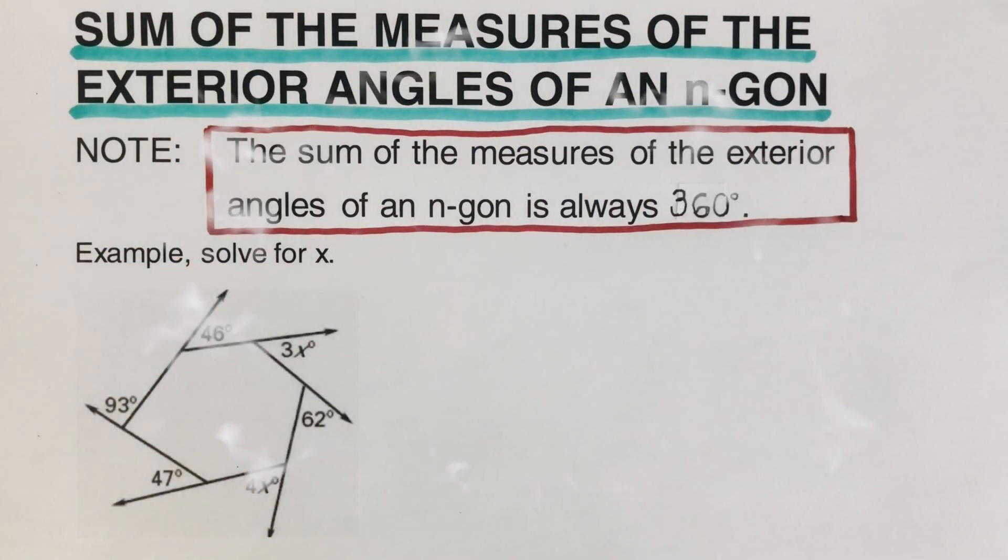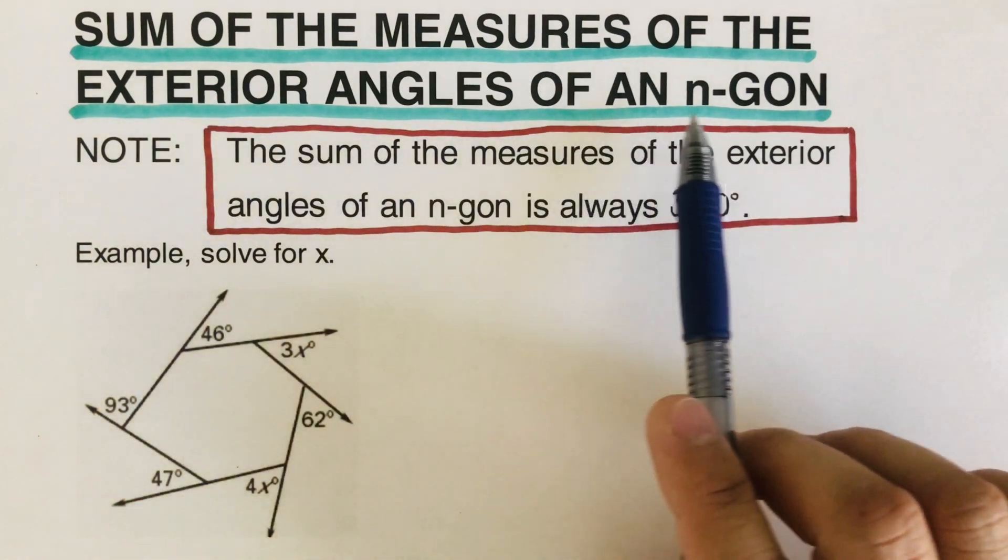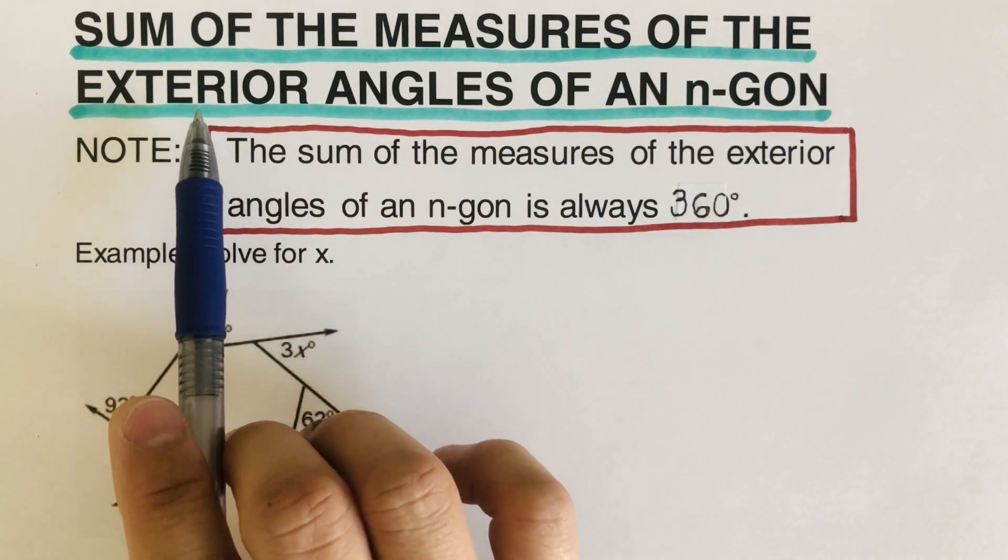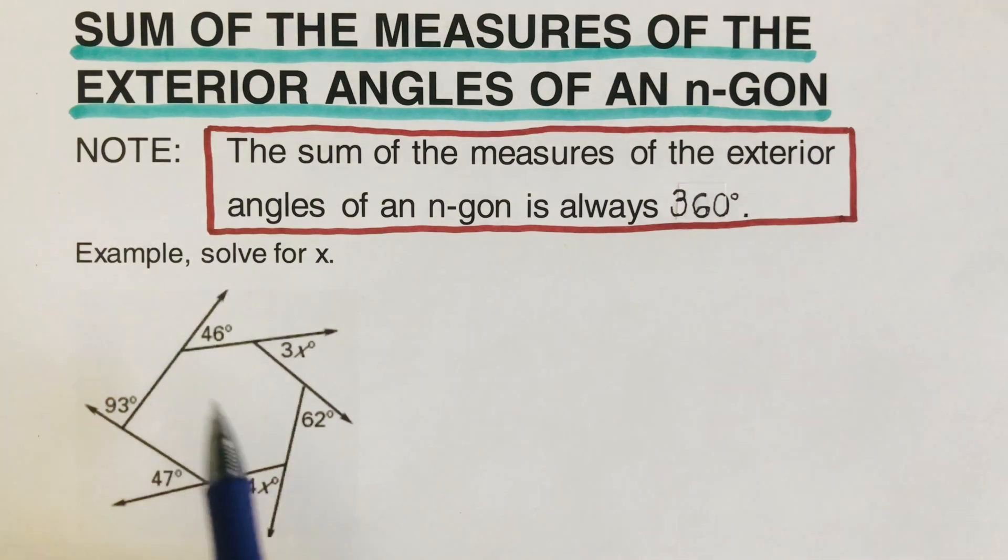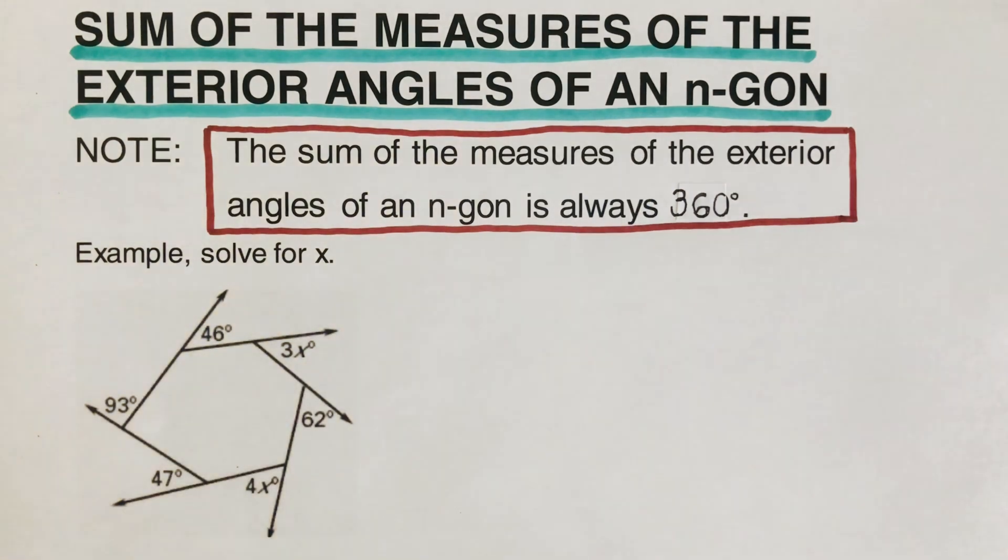Hello everyone. Today we're going to determine the sum of the measures of the exterior angles of an n-gon. So exterior angle means it's on the outside. As you can see on the picture, the angles we have are located on the outside. There is another video that talks about the sum of interior angles - I'll put the link in the description box below. But today we're focusing on the exterior angles.